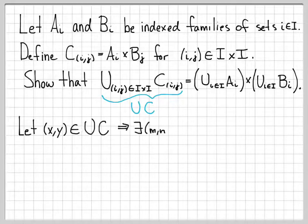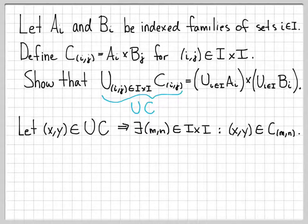For the first direction, let's choose an arbitrary element from the left-hand set. If we have an arbitrary element from the left-hand set, that means there has to be some element in this cross product — let's call that index m and n — such that x comma y is in the set c of m comma n. We're unioning over all these sets c of i comma j, so if we're in the union, we have to be in at least one of them. I'll call that set the one with coordinates m comma n, where m comma n is in the Cartesian product I×I.